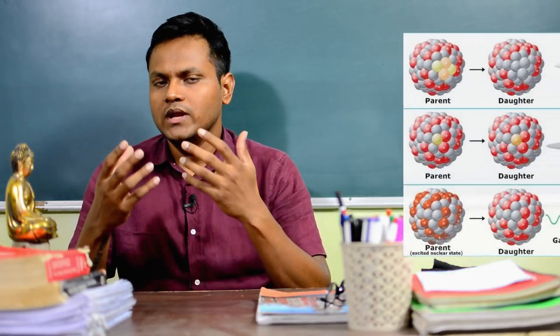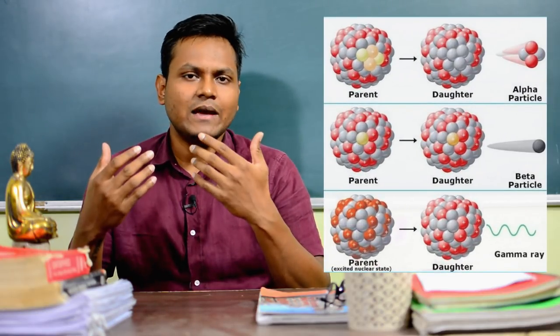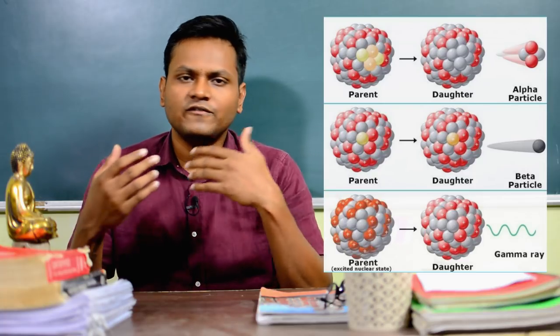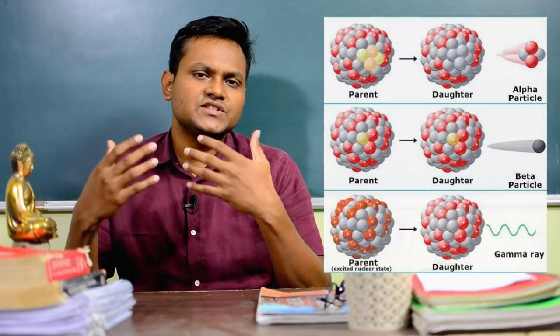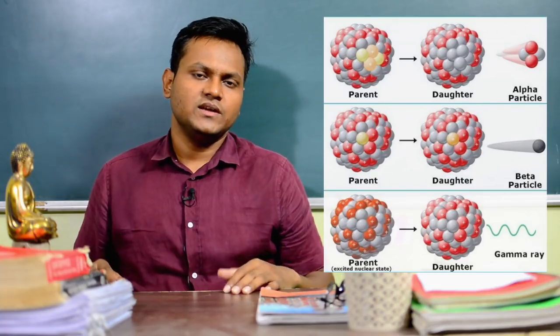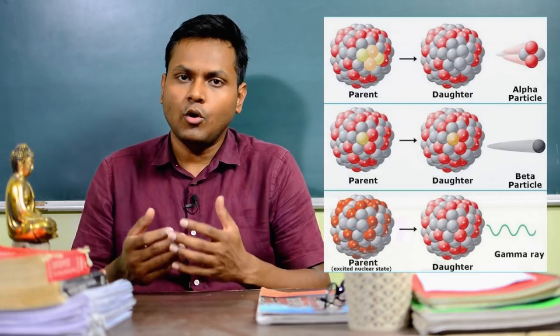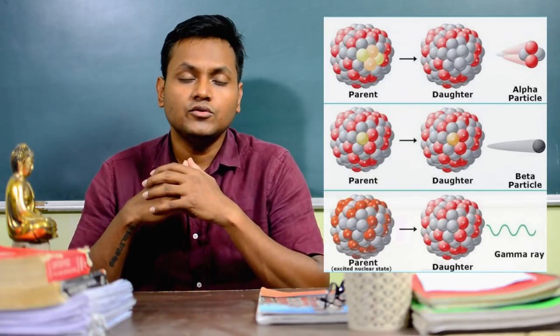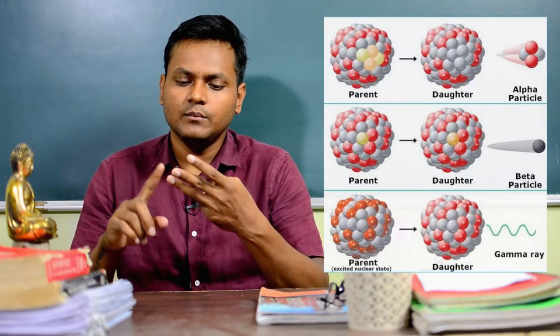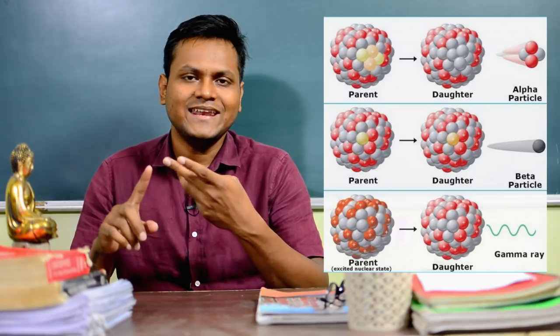Radioactive decay, or nuclear radioactive disintegration, is a nuclear process in which a nucleus suddenly emits a particle or a photon without any external excitation. It happens spontaneously on its own. These nuclear decay processes that happen automatically can be broadly classified into three types: alpha decay, beta decay, and gamma decay.